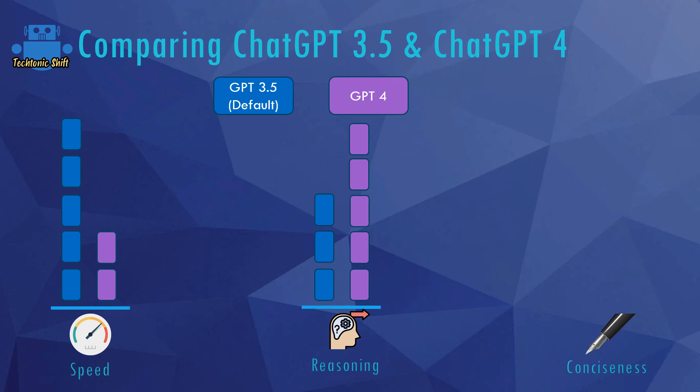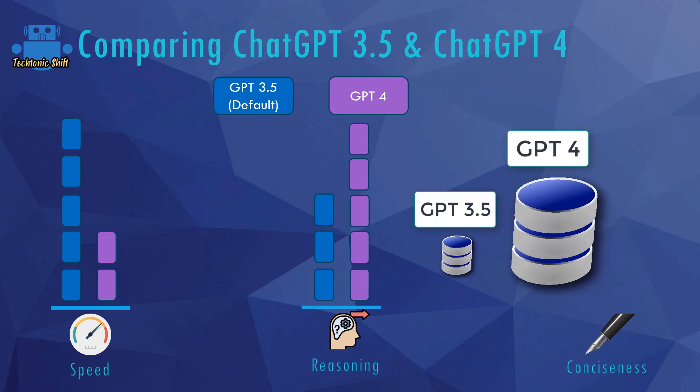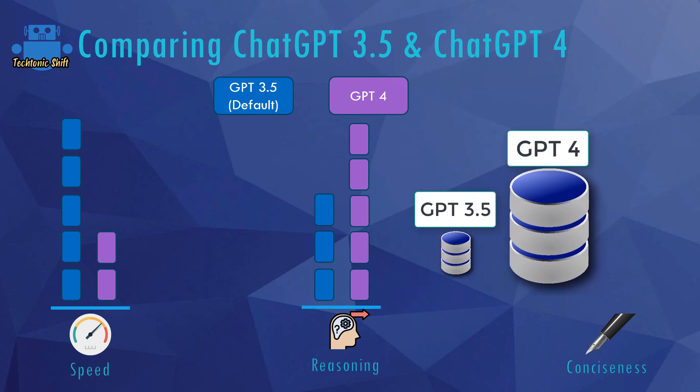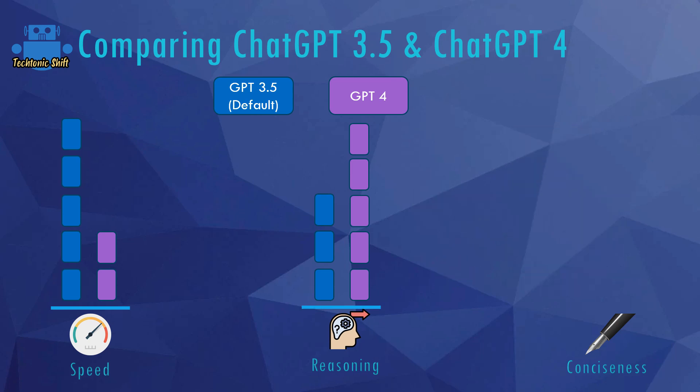As ChatGPT 4 was trained with way more data and is also able to process a lot more data, it simply can calculate the probabilities for the next character, word, or sentence based on a bigger database. Therefore, the output ChatGPT 4 provides is way more elaborated and more logical — which is why we have this big difference between 3.5 and 4.